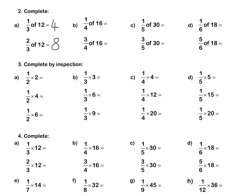Question 3. A half times 2 means exactly the same as a half of 2, which we know is 1. A half times 4 is the same as a half of 4, which is 2. And a half times 6 is 3. Let's look at B together.